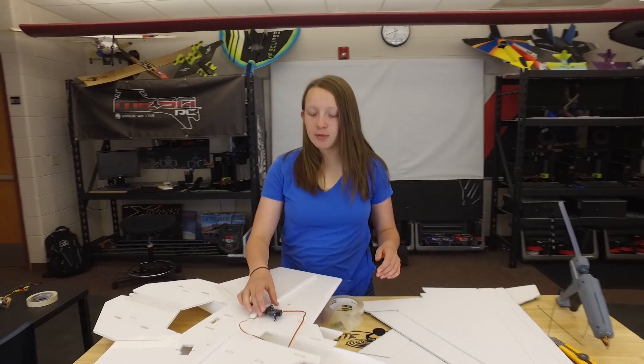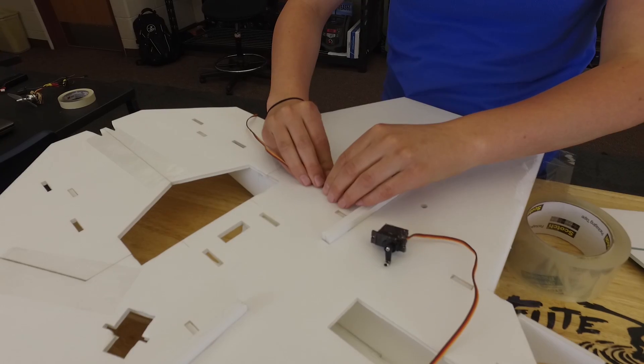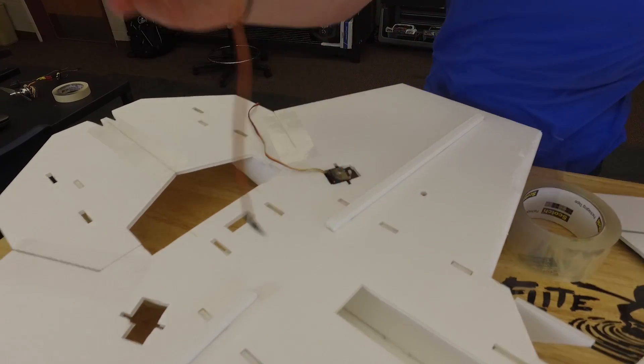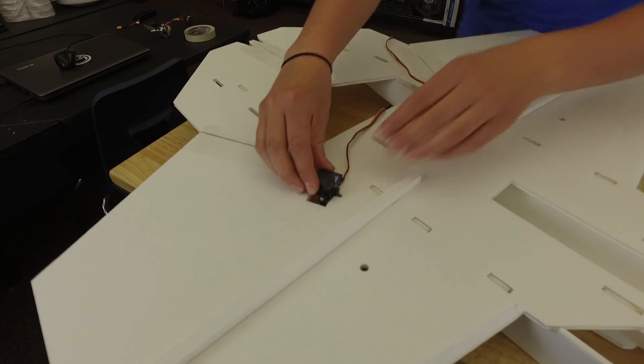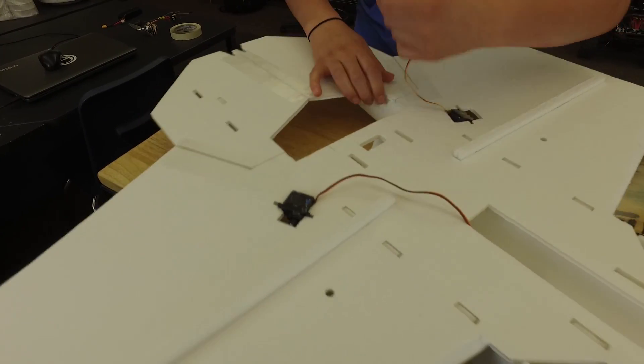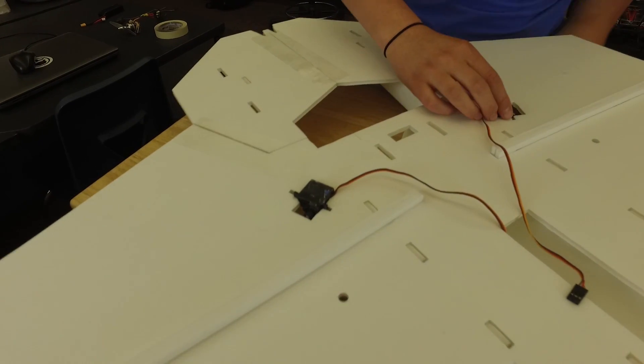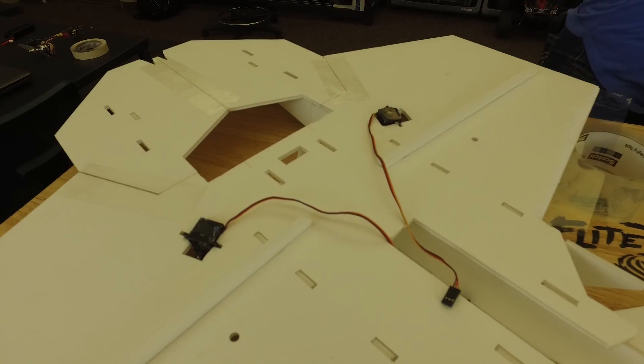Before you go any further, we're going to put our servos in. So we're just going to put them in these holes. And we oversized the servo holes just a little bit to accommodate for different kinds of servos. So you're just going to throw them in there and make sure your wires go back towards the nose. And we're just going to put some glue around the edges.